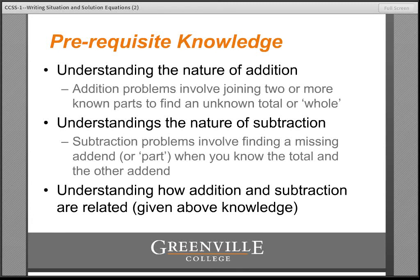Basically, learners need to understand the nature of addition in order to do this — not necessarily before they start, but to become proficient independently. They can develop these understandings through working with situation equations in an environment with teacher modeling and classroom dialogue. To become proficient independently, they need to understand: addition involves knowing two parts or addends and finding the whole; subtraction involves knowing the whole and one part while the other part is missing; and how addition and subtraction are related to one another.